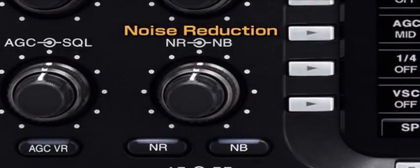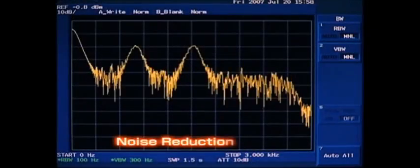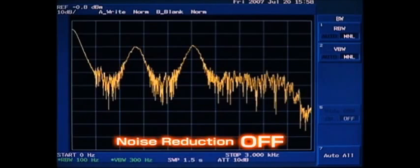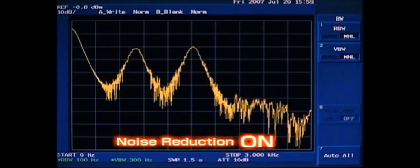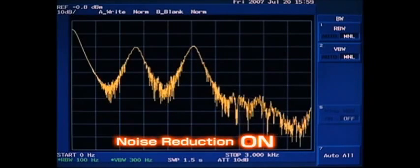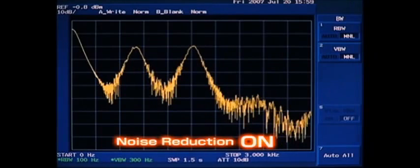The noise reduction function utilizes the amazingly high processing speed of the 32-bit floating point DSP unit for calculating complicated high-level algorithms to distinguish signal components from noise instantly. The noise reduction level is adjustable with the noise reduction knob.